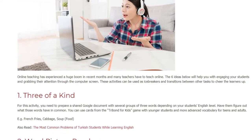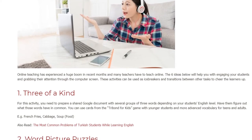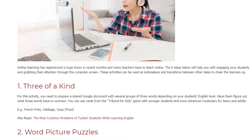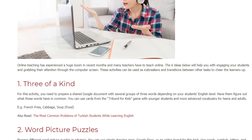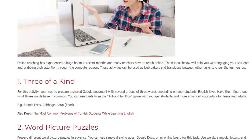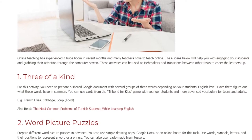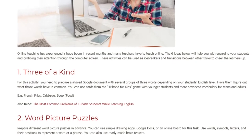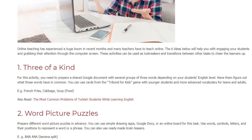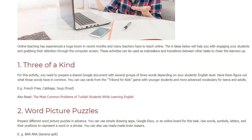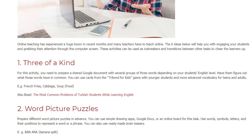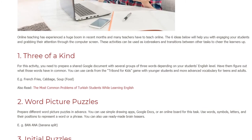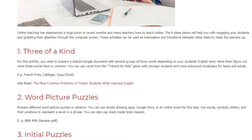One: Three of a Kind. For this activity, you need to prepare a shared Google document with several groups of three words. Depending on your students' English level, have them figure out what those words have in common. You can use cards from the Tribond for Kids game with younger students and more advanced vocabulary for teens and adults.